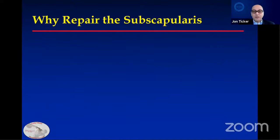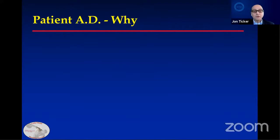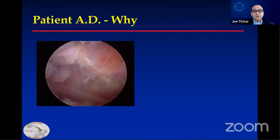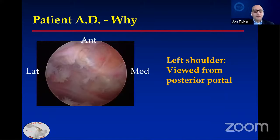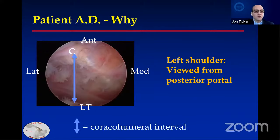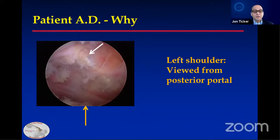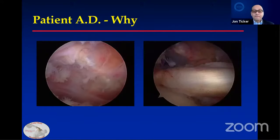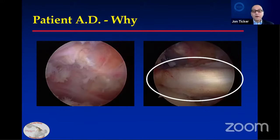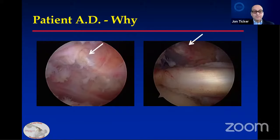Why is it important to repair the subscapularis? I'll show you one patient viewing from posterior on the left shoulder. Some landmarks of the coracoid and the empty or bare lesser tuberosity. This is the coracohumeral interval, the conjoined tendon which includes the short head of the biceps. What's missing here is there's no subscapularis, as you can see. This is after the repair in this patient — it's well attached securely. So that's what our goal is: an anatomic repair.